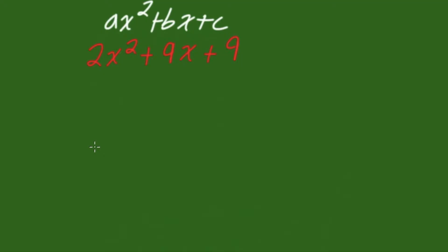And that way is still by finding two numbers, only now our two numbers are found by finding two numbers that multiply to a times c. So in our case, a is 2 and c is 9, so a times c is 2 times 9, which is 18. So we have to find two numbers that multiply to 18, but those same two numbers have to add to b, which in our case is 9. So let's try to find these two numbers.